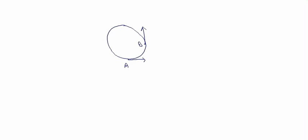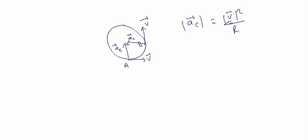Taking the same example: an object is moving on a circular path. At point A its velocity is in one direction, and at point B its velocity is in another direction. The centripetal acceleration acting on the object is always directed towards the center. The magnitude of centripetal acceleration is v² / r, where v is the magnitude of the velocity vector and r is the radius of the circle.